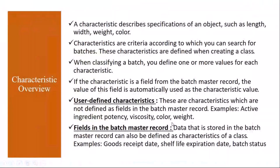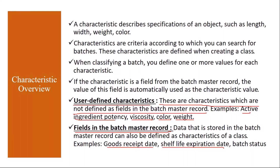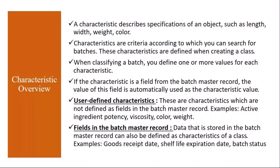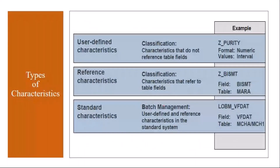User-defined characteristics are those not defined as fields in the batch master record — for example, active ingredient, potency, viscosity, or color. Whereas fields in the batch master record are things like goods receipt date, shelf life, and expiration date. Now we will talk about the types of characteristics before creating them in the system.